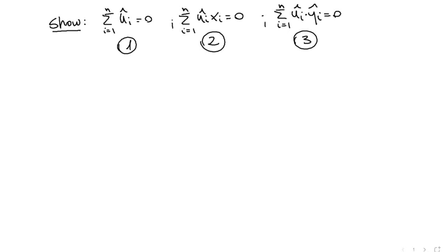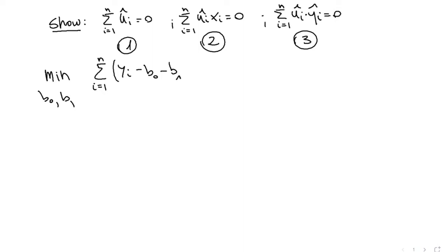In this video we're going to show the following three simple properties. For properties one and two, all we have to do is remember the problem and the first-order conditions that we solved to get the OLS estimators. We're trying to find b0 and b1 so as to minimize the distance between y_i and our predicted value of y. To solve this, we got two first-order conditions.